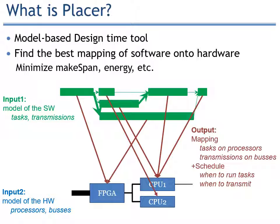Concretely, the input is divided into two main parts. You have the model of the software, shown in green on the slide, which is task-based and includes the transmissions. In blue, you have the model of the hardware, including the processing elements such as FPGA or CPU, and the buses. In red, you have the output, which is the mapping — so where tasks execute and when they execute.